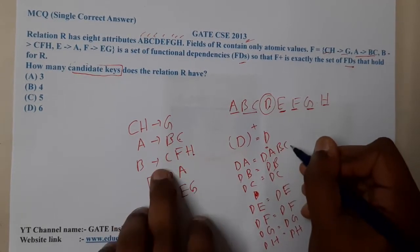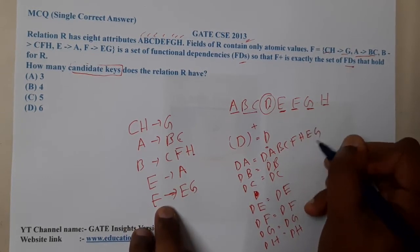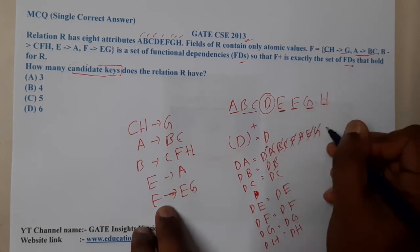From B, I can go to CFH. From F, I can go to E and G. I think everything is covered. So A, B, C, D, E, F, G, and H. AD is a candidate key.